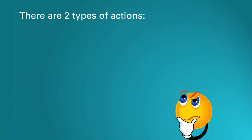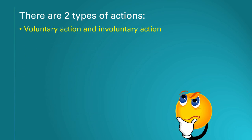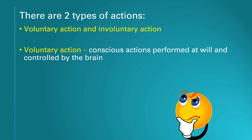There are two types of actions our bodies can perform: voluntary action and involuntary action. Voluntary actions are conscious actions performed at will and controlled by the brain. Conscious actions are actions that we are aware of — we know that they are happening at the time.